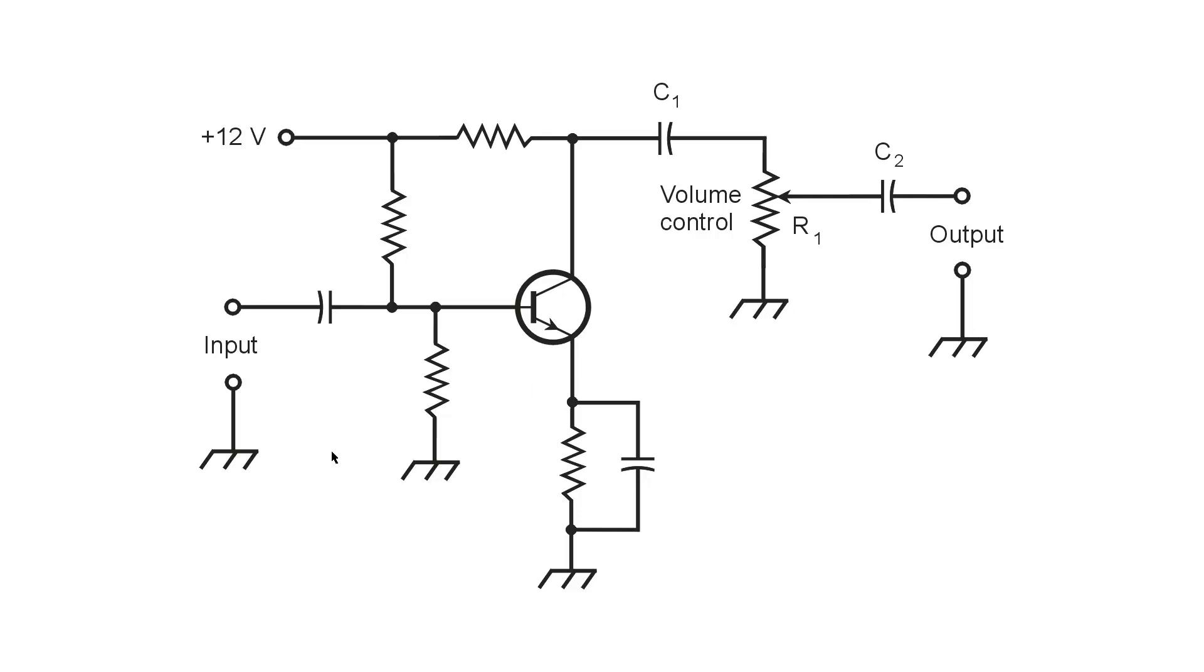That is your basic volume control. Bias resistors. Emitter resistor, which helps to regulate the bias. I've been through all of that. I don't want to repeat it.